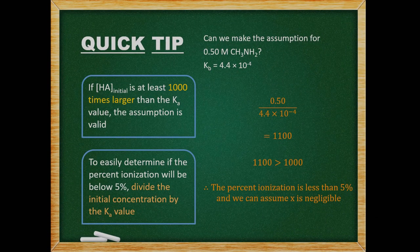Here is a quick tip for determining whether or not x, or the percent ionization, is negligible. If the initial concentration of acid is at least 1,000 times larger than the Ka value, the assumption is valid. If we are dealing with a base, then its initial concentration must be 1,000 times larger than the Kb value. To easily determine if the percent ionization will be below 5%, we divide the initial concentration by the Ka value. When we divide an initial concentration by the Kb value and get a number greater than 1,000, the percent ionization is less than 5% and we can assume x is negligible.